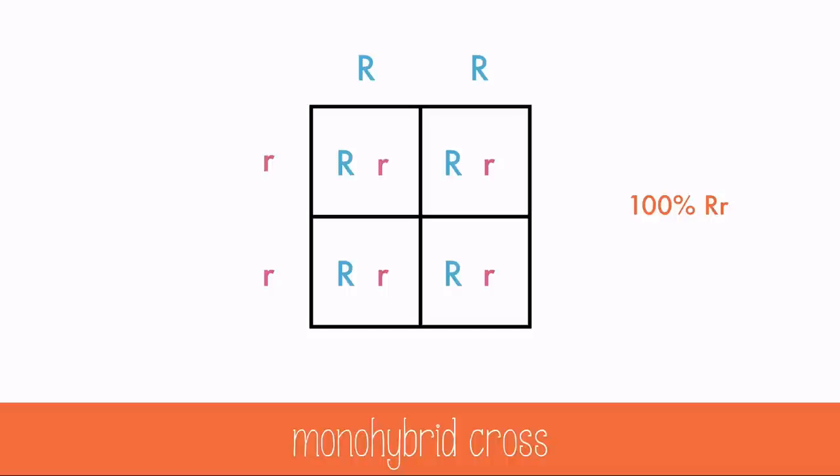Your results show probabilities for the genotypes. In this case, 100% are heterozygous.